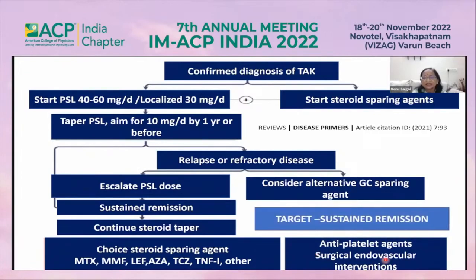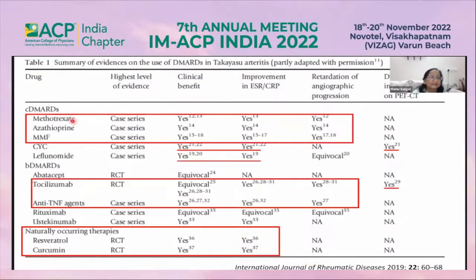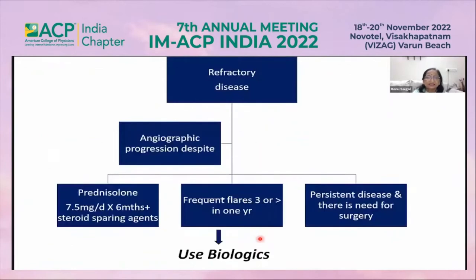Antiplatelet drugs and surgical/endovascular intervention indications are the same as described previously. Various trials show that methotrexate, azathioprine, mycophenolate, tocilizumab, and anti-TNF agents provide clinical benefit, improvement in ESR and CRP, and retardation of angiographic progression. Naturally occurring therapies like resveratrol and curcumin have also shown clinical benefit with improvement in ESR and CRP.